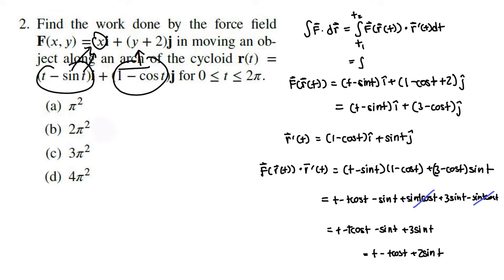So we evaluate the integral from 0 to 2π of (t − t cos t + 2 sin t) dt. Because this is a physics class, you're allowed to use a calculator to evaluate these integrals. When you evaluate that integral, you get 2π², which is choice B.